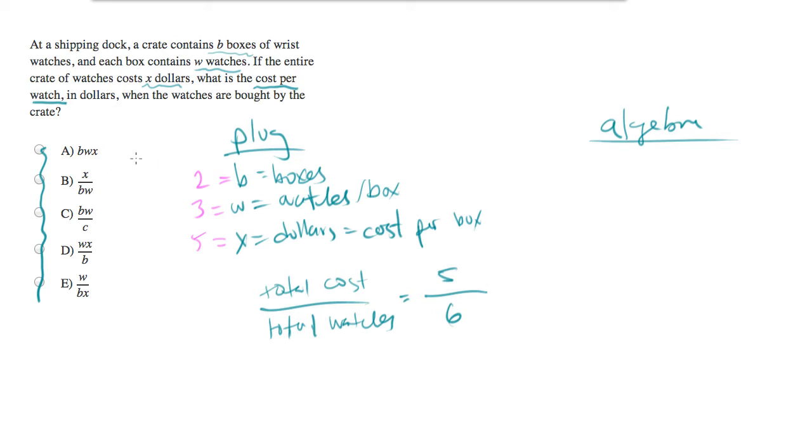Now we simply need to plug in 2, 3, and 5 to the answer choices and figure out which one equals 5 sixths. If we do 2 times 3 times 5, that's not going to be 5 sixths. This will be 5 over 2 times 3. That equals 5 sixths, that's a potential winner right there.